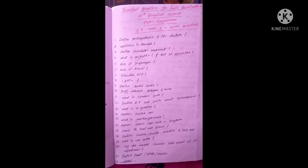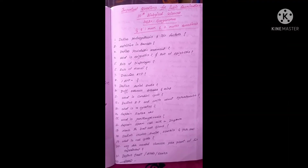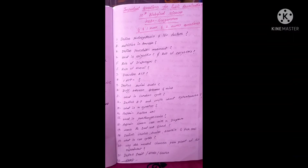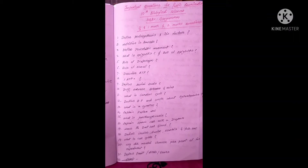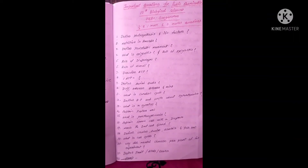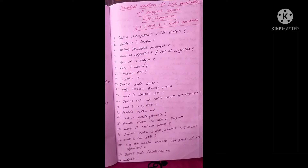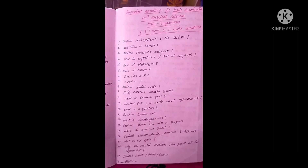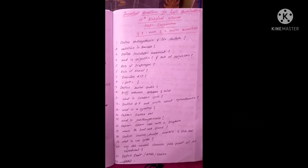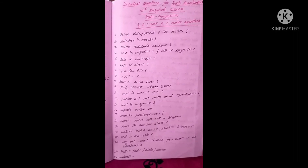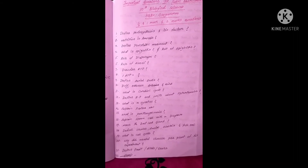For this question, you have to answer what photosynthesis is and what factors are involved. The next question is nutrition in amoeba. Then: define peristaltic movement. Next: what is epiglottis and what is its role? You should explain in two sentences for a one-mark question, one word for a half-mark question, and two to three sentences for a two-mark question.